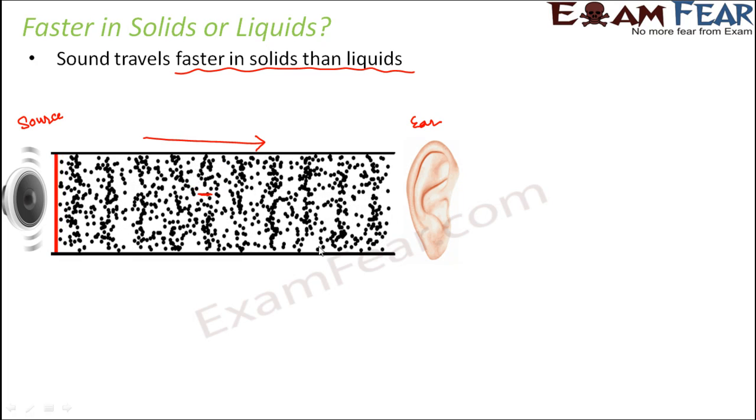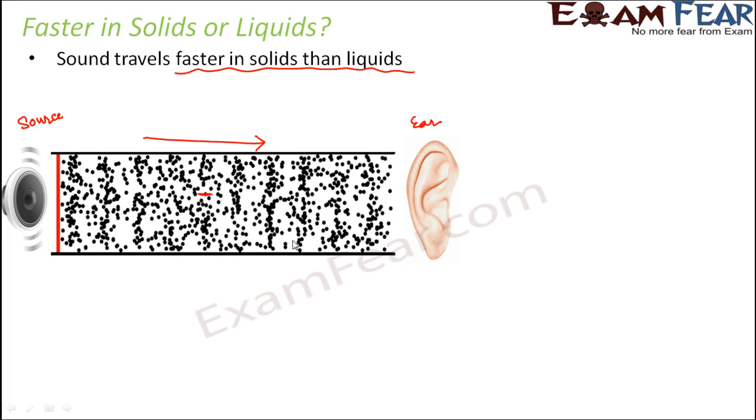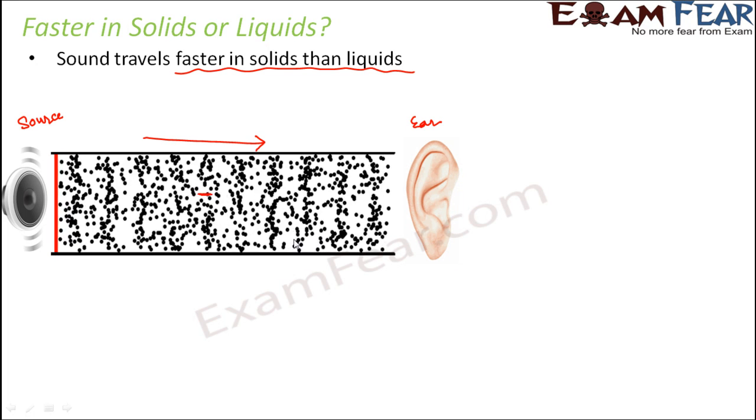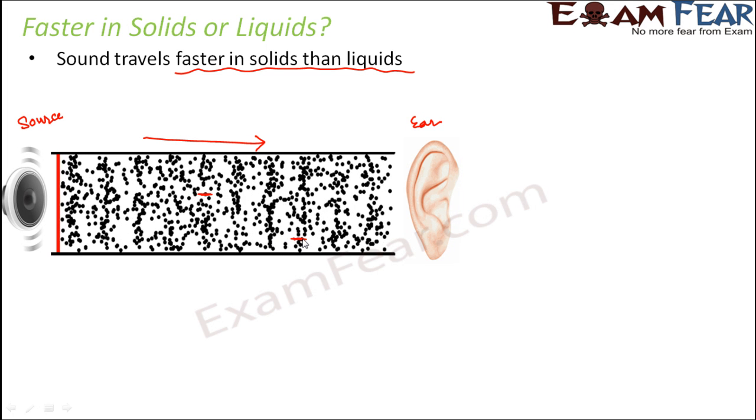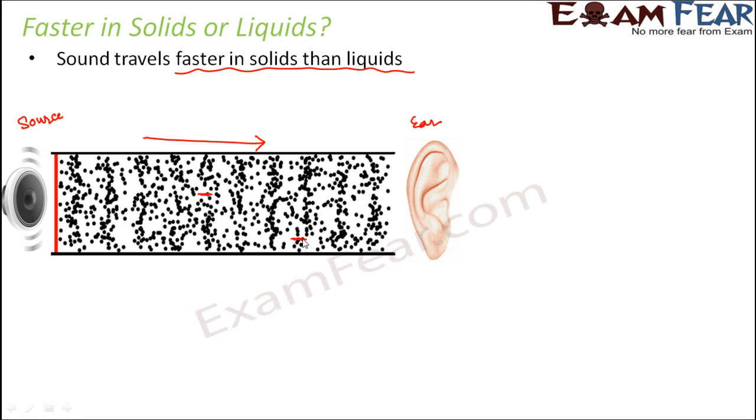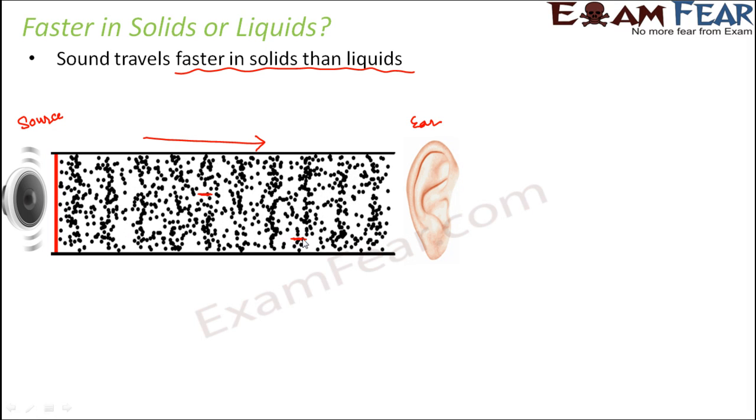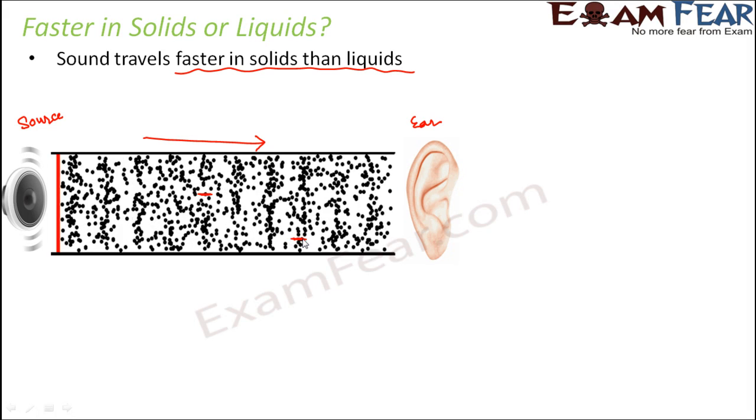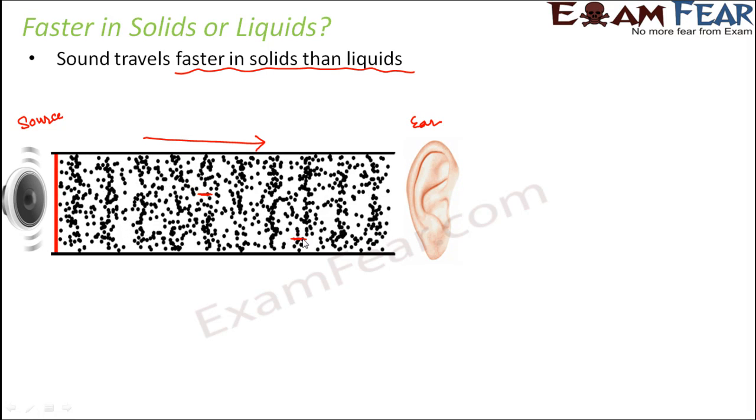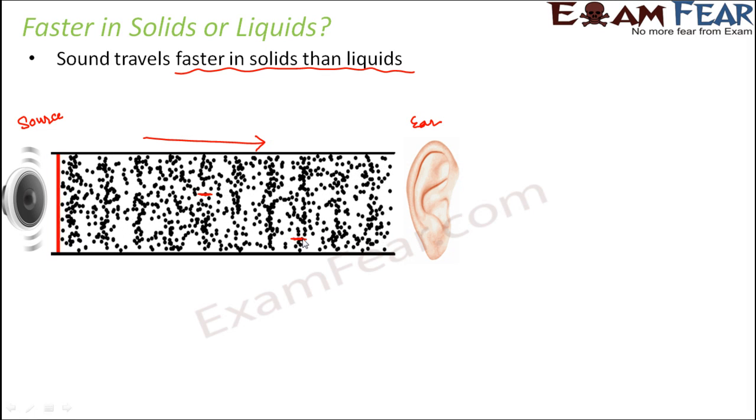Just try to observe some other dot, any dot of your choice. You will see that it is just moving like this. It is just a to and fro motion. So basically when you observe it minutely, all the particles of the medium are just vibrating and transferring the energy to the neighboring particles and that is how sound is propagating from one place to another.